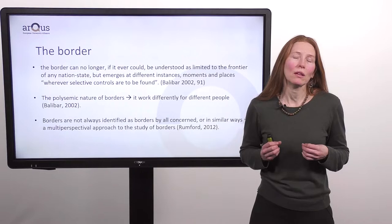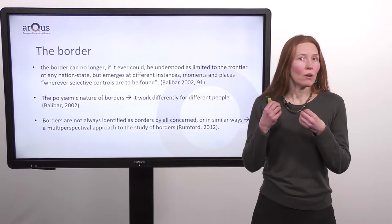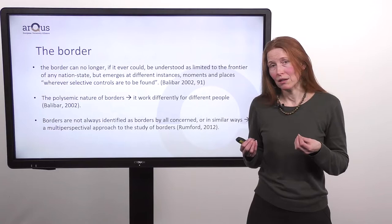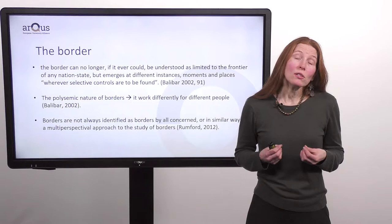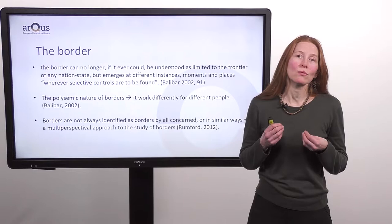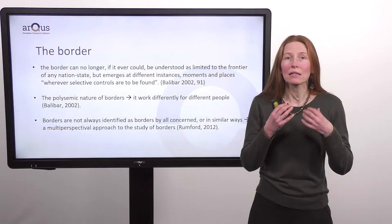We can think particularly about the racialization of borders — tied also to gender — so how it is more likely who will be stopped and searched on the street in Oslo, in Marseille or München. These are very often racial processes. This means borders are not always identified as borders by all concerned or in similar ways. This is why Rumford asks us to take a multi-perspectival approach to the study of borders: how are borders experienced in different ways by differently positioned people?